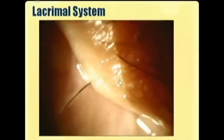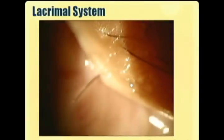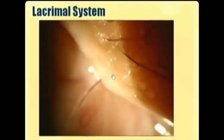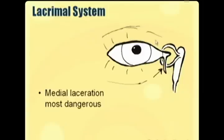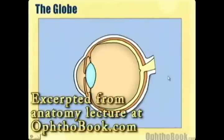Here's a patient who came in complaining of tearing. On exam you can see she had an eyelash stuck in the punctum, so we just pulled that out and her symptoms went away. If you do have a lid laceration, the most worrisome area is the medial side because you can cut right through the canalicular structures. This needs to be repaired surgically by running a tube through the system and leaving it there while everything heals around it to keep the drainage pathway open.